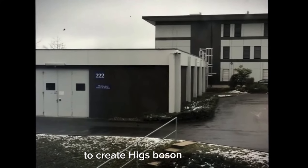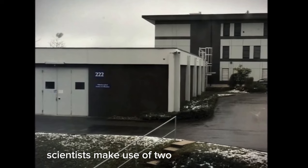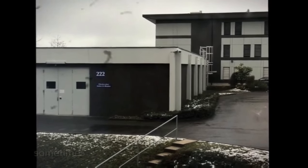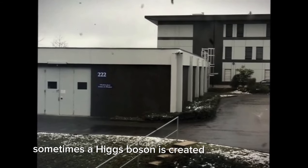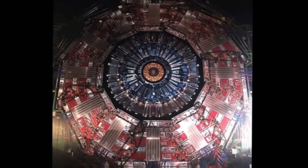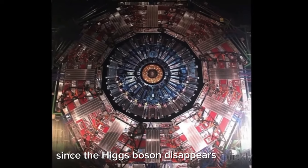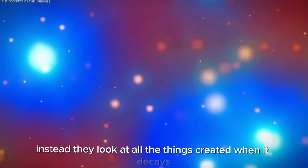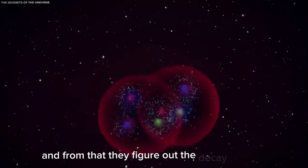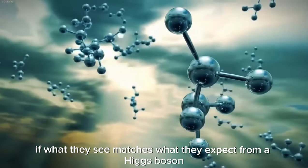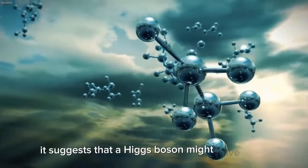To create Higgs boson particles, scientists make use of two beams of particles and make them crash into each other really fast. Sometimes, a Higgs boson is created as part of this collision, but it doesn't last long because it decays quickly. Since the Higgs boson disappears quickly, scientists can't see it directly. Instead, they look at all the things created when it decays, and from that, they figure out the decay process. If what they see matches what they expect from a Higgs boson, it suggests that a Higgs boson might have been made.